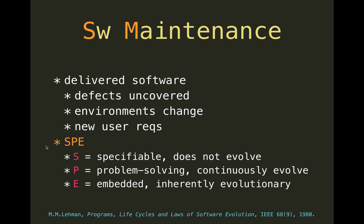S-type systems are specifiable. It's basically when you have a very clear goal, a very clear definition of the problem you're solving, and this kind of software does not evolve. If you write something to search a substring in a database or solve a Sudoku puzzle, then this solution doesn't change. It works, you can test it, you can prove that it works, and that's it.